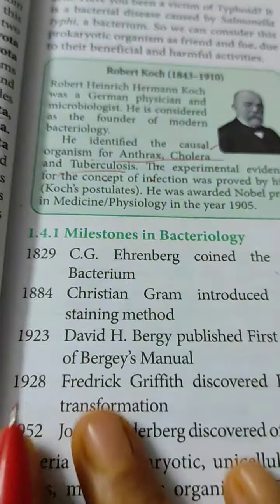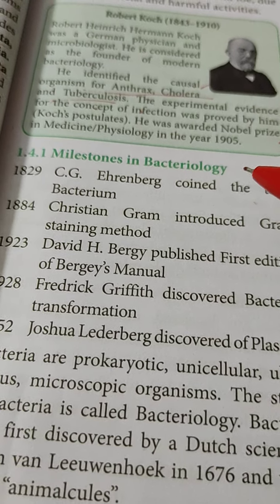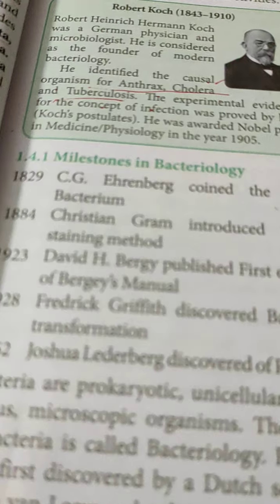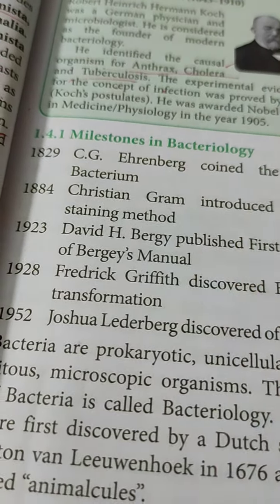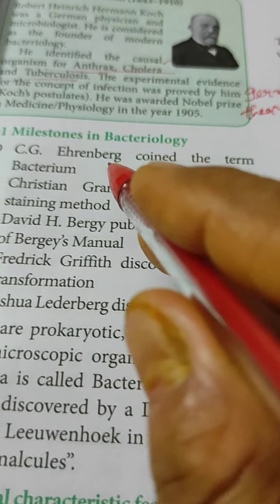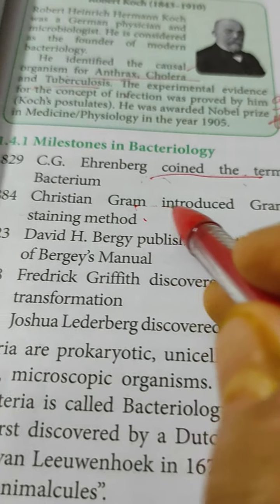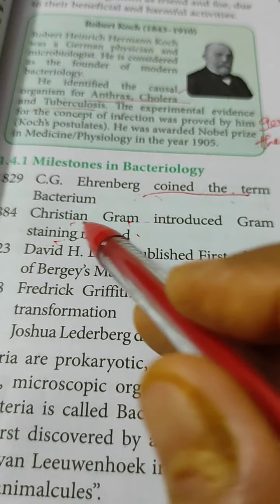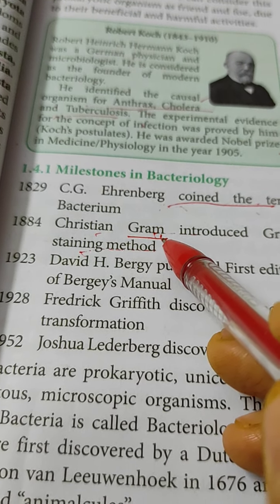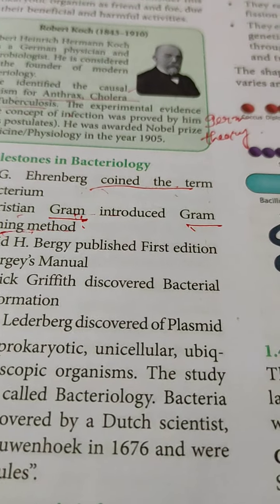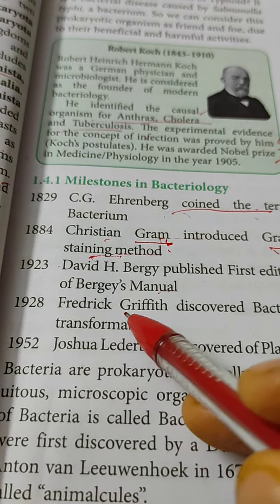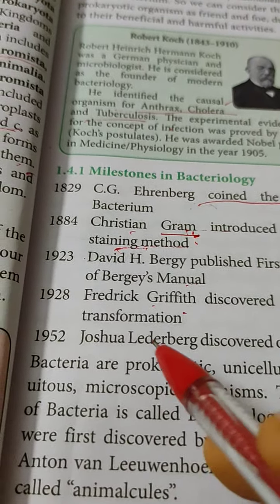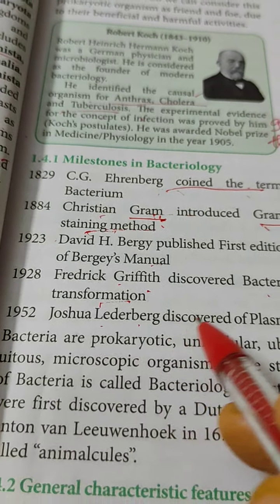Milestones in bacteriology: Ehrenberg in 1829 coined the term 'bacterium.' Christian Gram introduced the staining method — the Gram stain — used to identify bacteria under the microscope. Frederick Griffith, an English microbiologist, showed that bacterial recombination takes place by transformation. Joshua Lederberg discovered the plasmid.